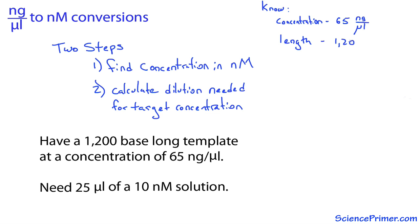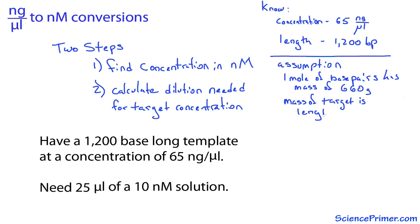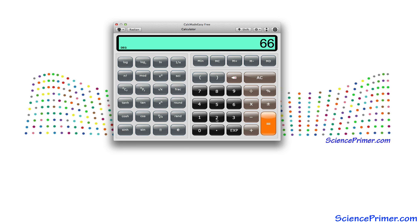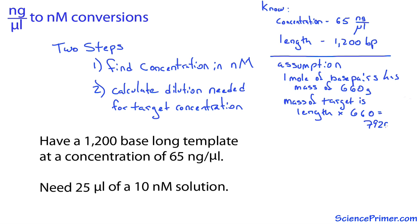To convert from a mass to a molar concentration, I need a molecular mass for the DNA template. To calculate the molecular mass, I'll assume that one mole of a pair of nucleotide bases has a mass of 660 grams. If this is the mass of a single base pair, the mass of a mole of the sample DNA is 660 grams times the number of base pairs. 660 times 1,200 equals 792,000. This is the molecular weight of the sample.